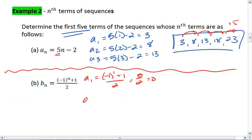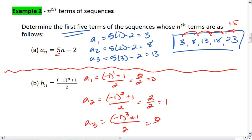For a_2, I plug in 2. I get negative 1 squared plus 1 over 2. Negative 1 squared is a positive 1. So this gives me 2 over 2, which is 1. For a_3, I get negative 1 cubed. My negative 1 goes back to being negative now. So I get 0 over 2, which is 0. And again, this pattern continues. I get 0, 1, 0, 1, 0 for my first five terms.